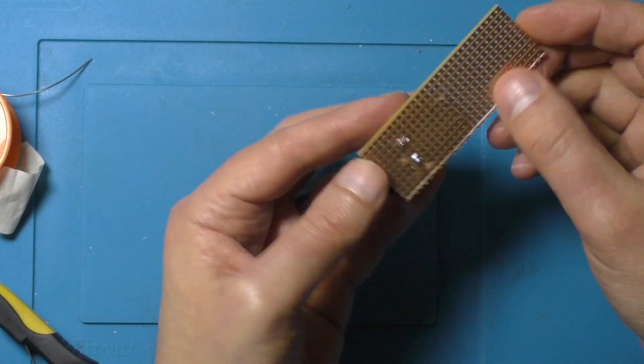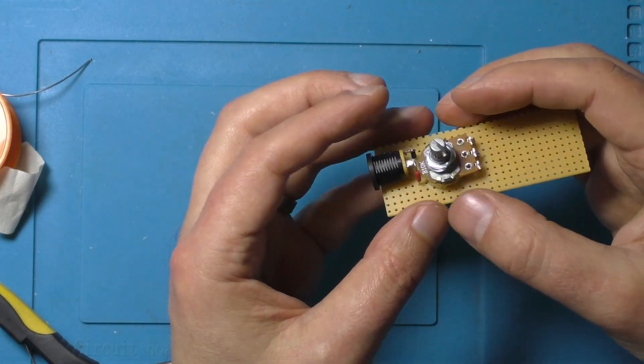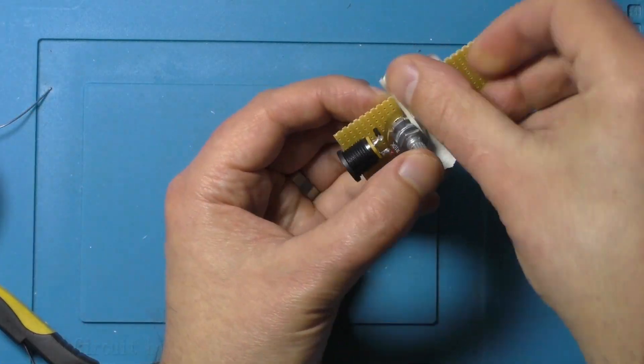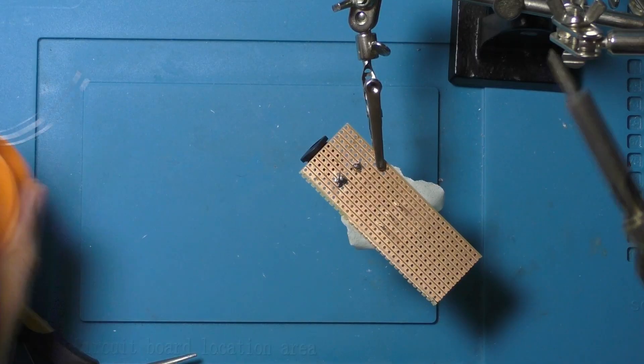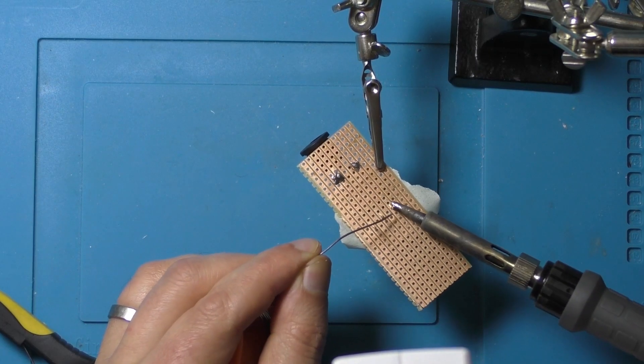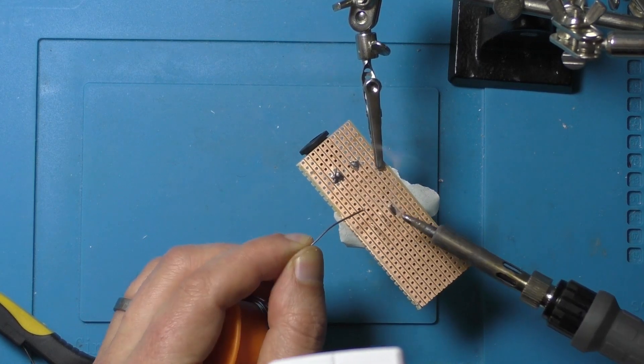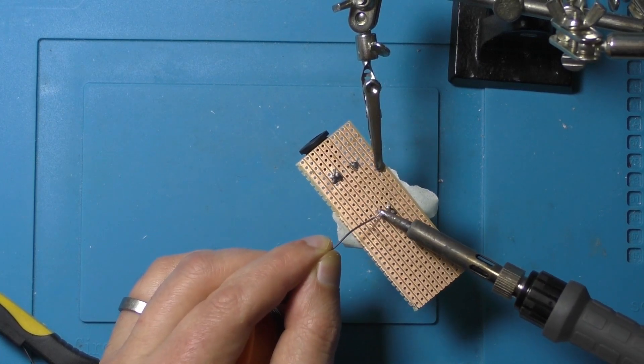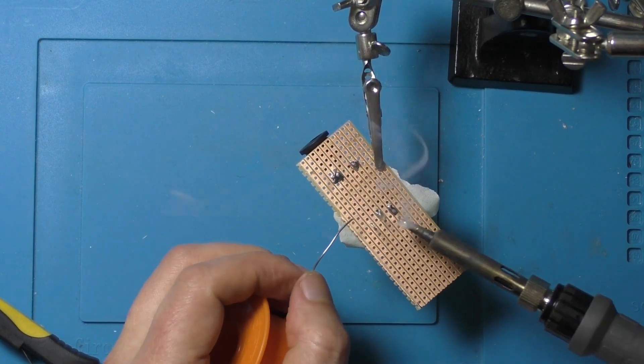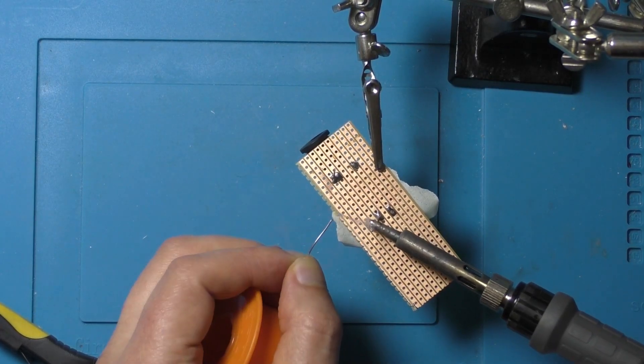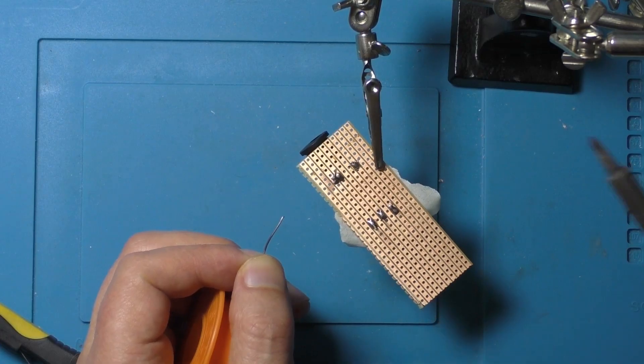This is where the Vero board is nice because I've just made sure that the outer two pins of the potentiometer are along the same copper strips as the power supply rails so I don't have to add any wires connecting them. They're just connected as soon as you solder them in.